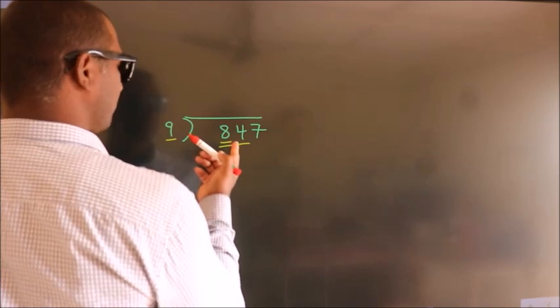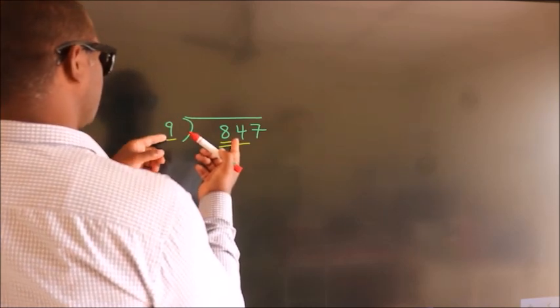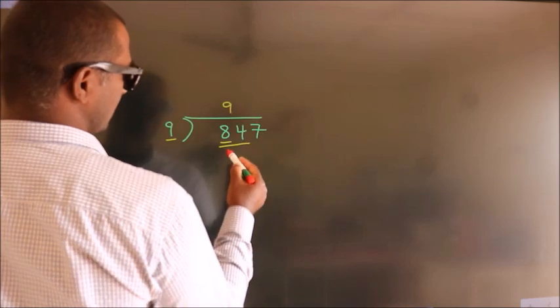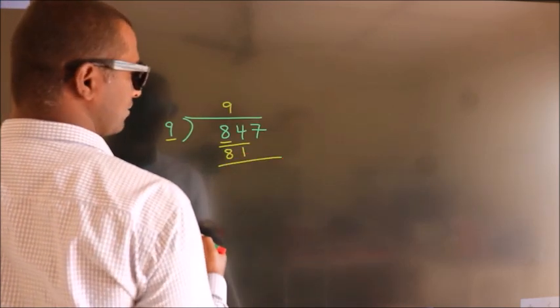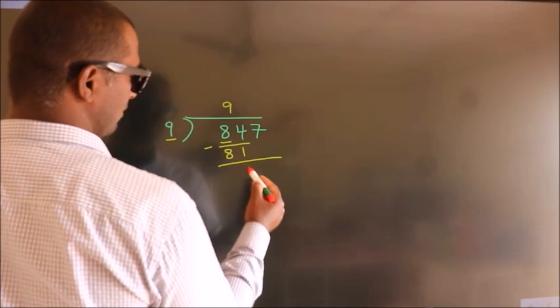A number close to 84 in the 9 table is 9 times 9 equals 81. Now we should subtract, we get 3.